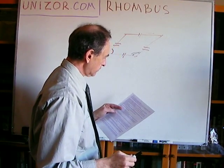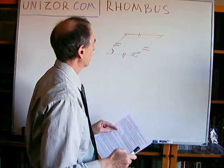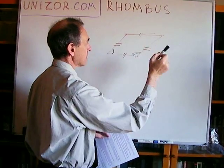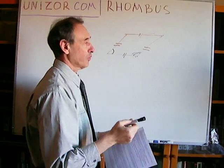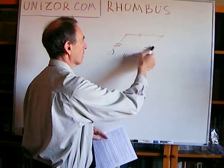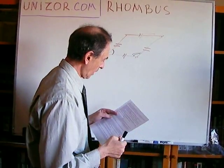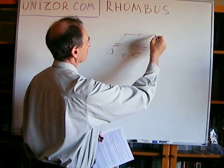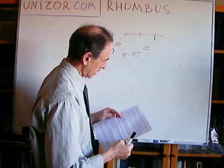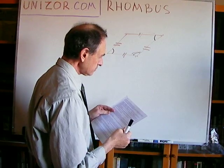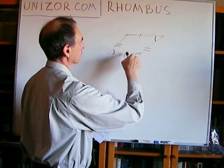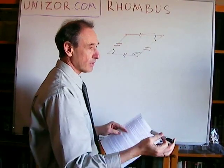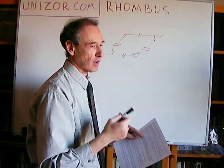If two pairs of opposite sides are congruent, then this is a parallelogram. We have proven that if this side is congruent to this, and this to this, then it's a parallelogram. In a rhombus, all four sides are defined to be congruent, so that's why a rhombus is obviously a parallelogram. Opposite angles are also congruent — this angle is congruent to this — and it's true for a rhombus as well because a rhombus is a parallelogram.